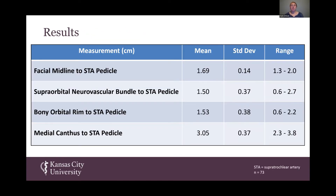For our results, the means and range of each measurement were used to create a surgical dissection danger zone. The measurement means and standard deviations were as follows: facial midline to pedicle was 1.69 cm ± 0.14, with a range of 1.3 to 2 cm; supraorbital neurovascular bundle to pedicle was 1.5 cm ± 0.37, with a range of 0.6 to 2.27; and medial canthus to pedicle was 3.05 cm ± 0.37, with a range of 2.3 to 3.8 cm. Of the 38 cadavers, 20 were male and 18 were female. 35 specimens were embalmed and three were fresh cadavers. No significant differences were found between right-sided and left-sided measurements, with P greater than 0.05.